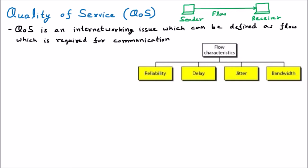If the sender is giving very fast data and the receiver is not able to accept it, that is not a good network. Or if the sender is very slow and the receiver is very fast, that is also not a good network. There should be some kind of flow — meaning speed, bandwidth, reliability — all things on which data moves should be decided, giving quality of service.